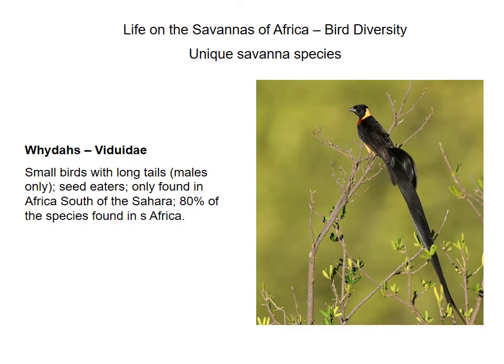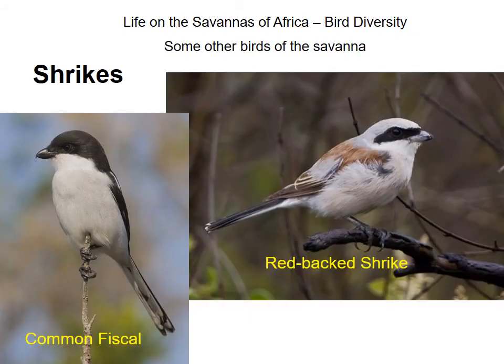The whydahs are another classically African group, only found in Africa south of the Sahara, with 80% of the species found in South Africa. They are seed eaters, as evident from their beaks, and the males tend to have very long tails to attract females. Shrikes — such as the common fiscal shrike and the redbacked shrike — tend to be relatively voracious predators, feeding on insects and small vertebrates. They characteristically perch and then swoop onto their prey, often using the same perch repeatedly.